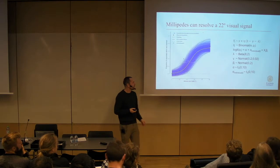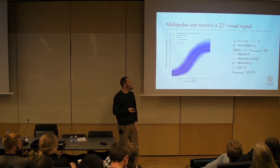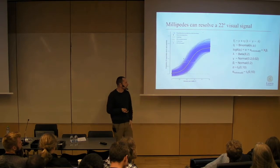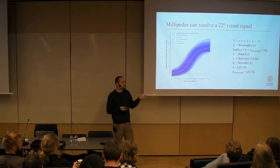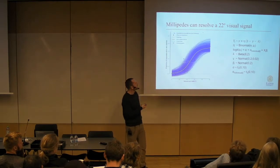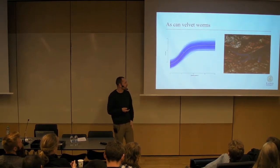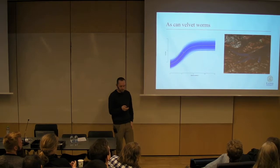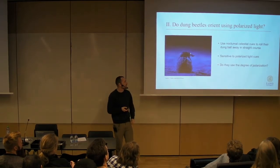I decided the most reasonable criterion to base the resolution on was the inflection point of this curve, which gives 22 degrees of visual angle. I also inspected the uncertainty around this. Knowing this from the signal type allows us to predict the angular sensitivity of the animal and compare it to what is known from the literature. I also looked at the velvet worm, another strange animal, using a different kind of stimulus. The resolution is actually quite a bit better for this animal than for the millipede.